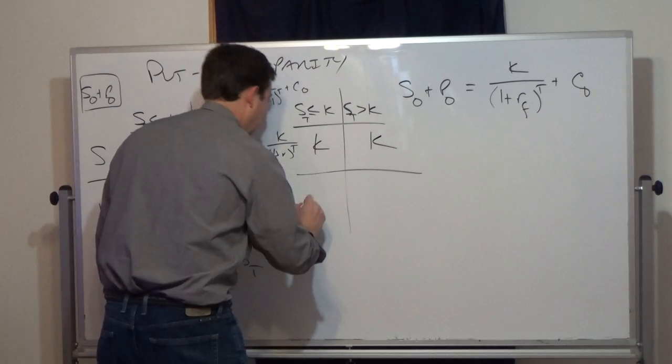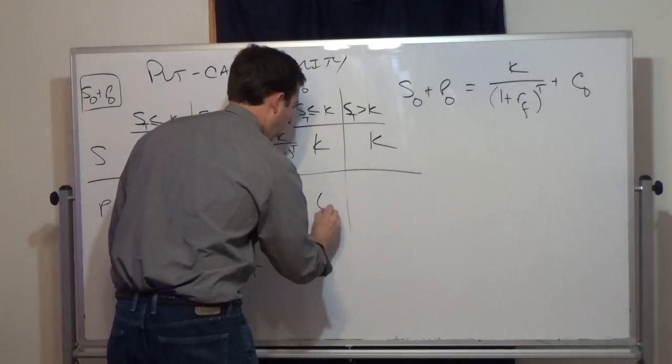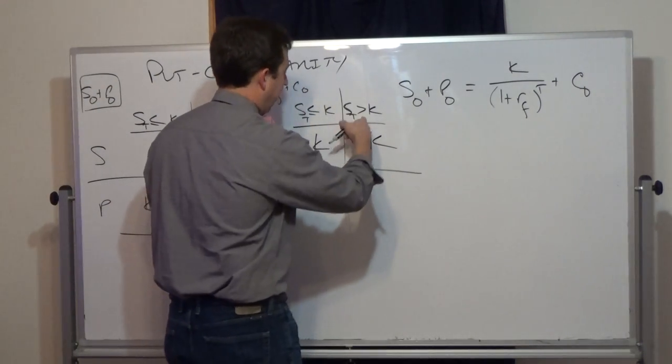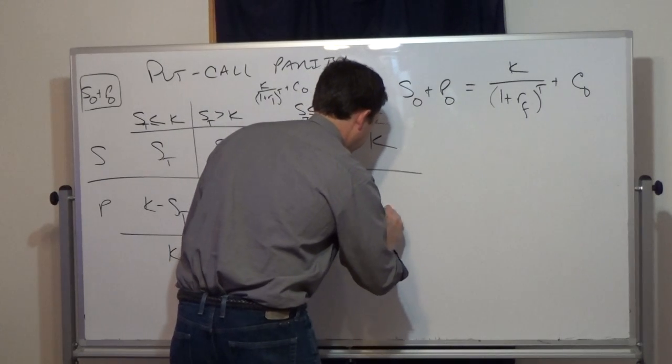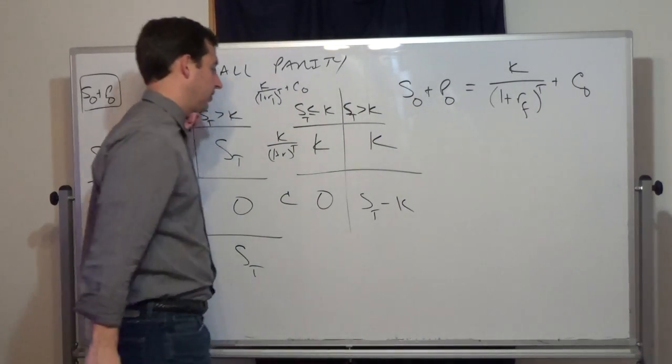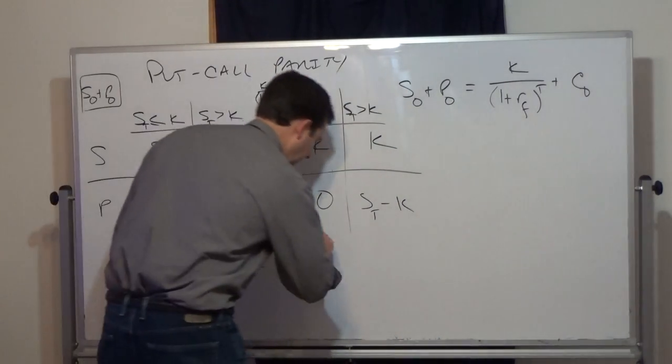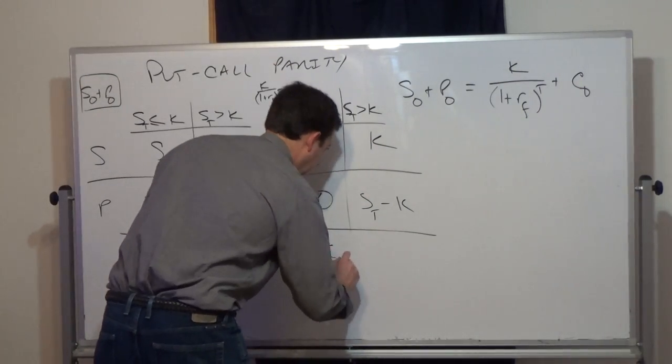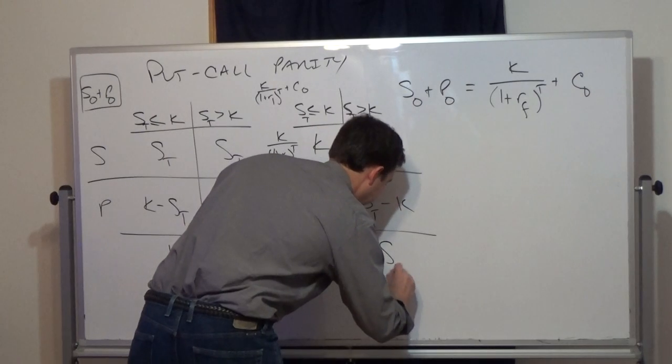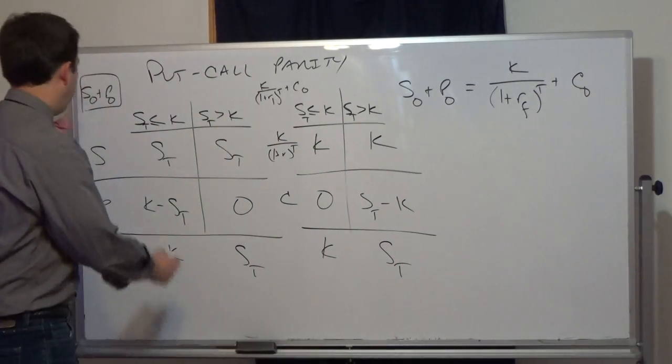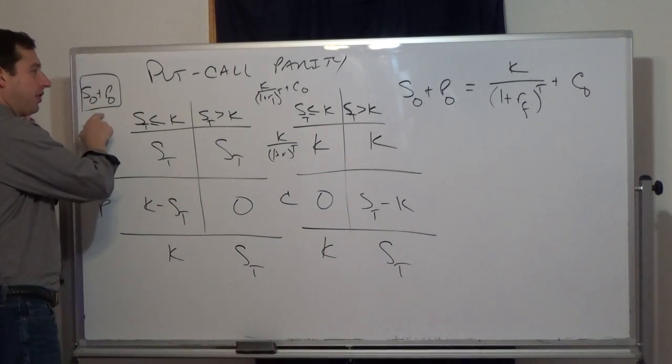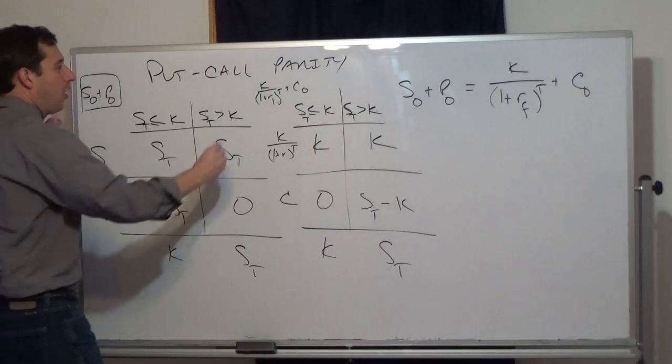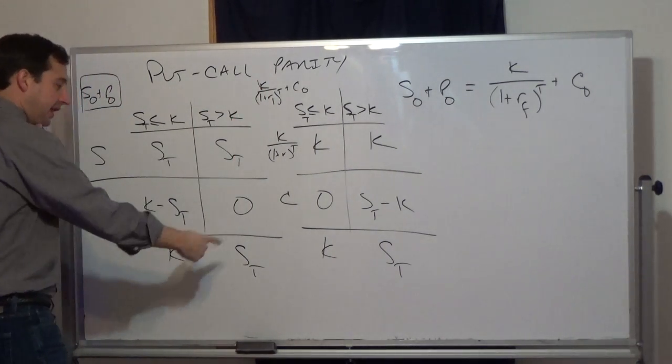The call, if the stock is less than the strike, the call pays zero. And in this case, the call pays the stock at expiration minus the strike price. Payoff on the entire position, we just sum the columns, K, S sub T. If you see, both our protective put and our bond plus stock pay the exact same thing.